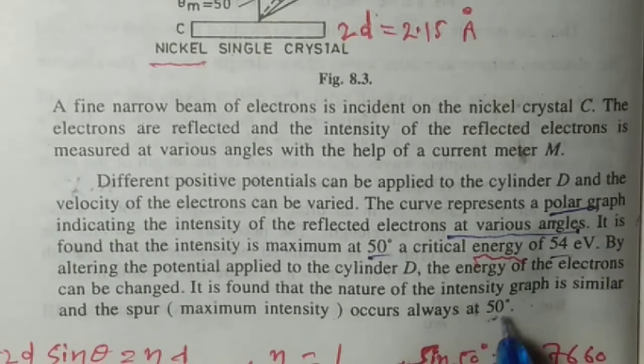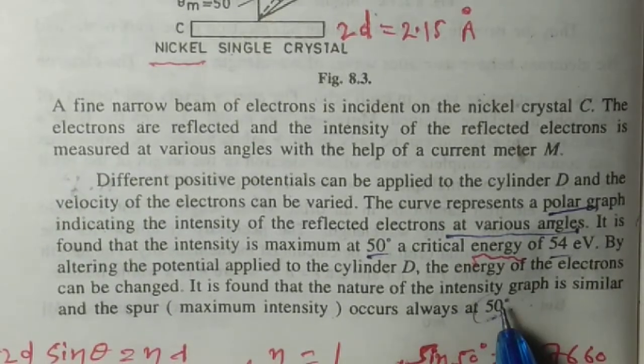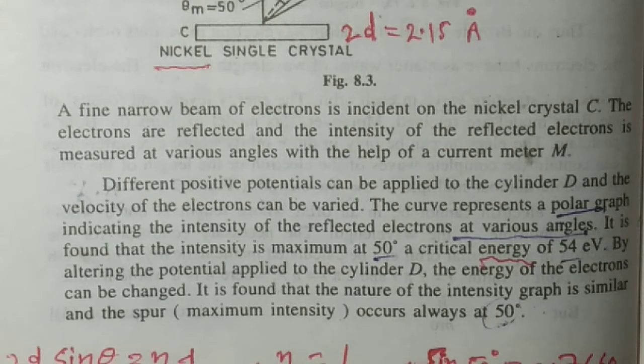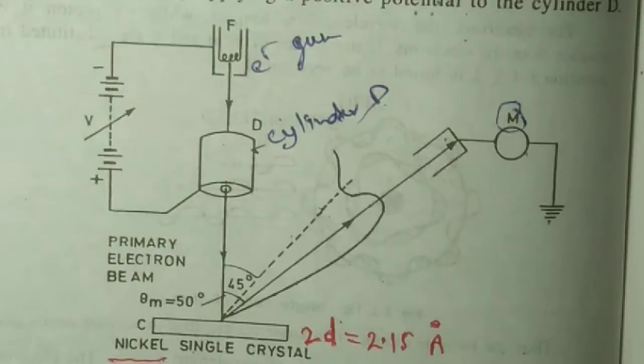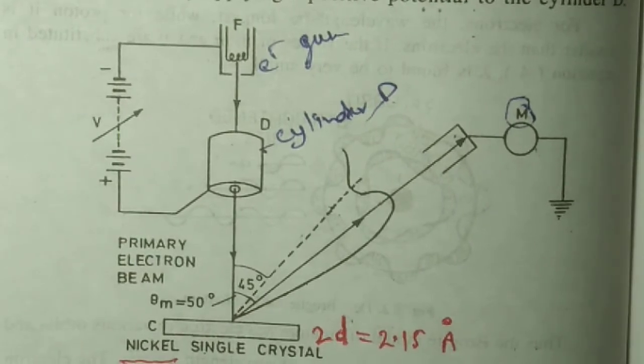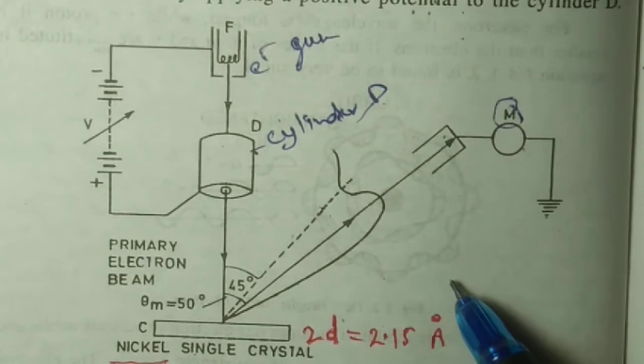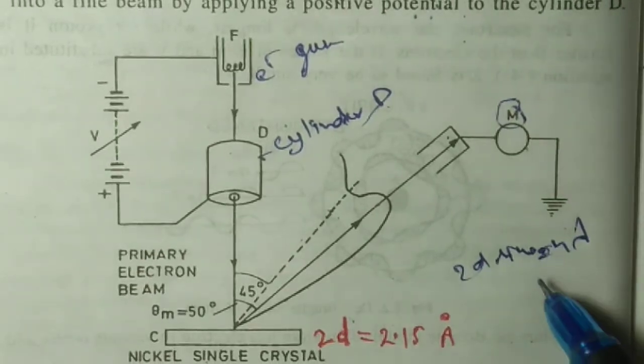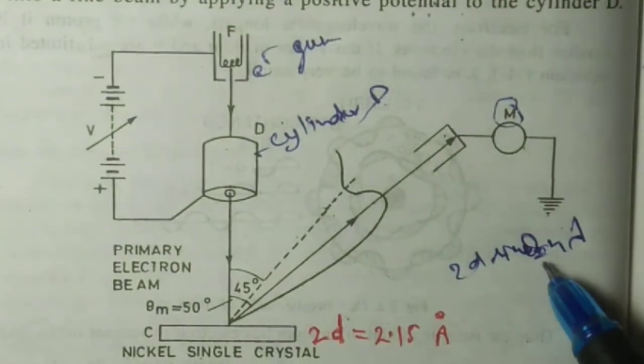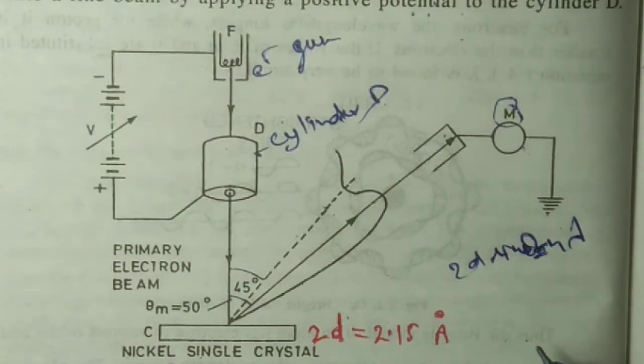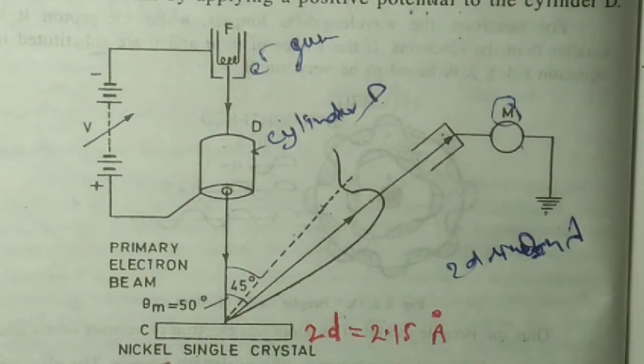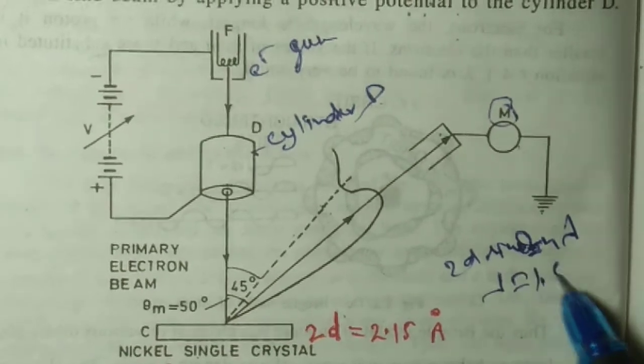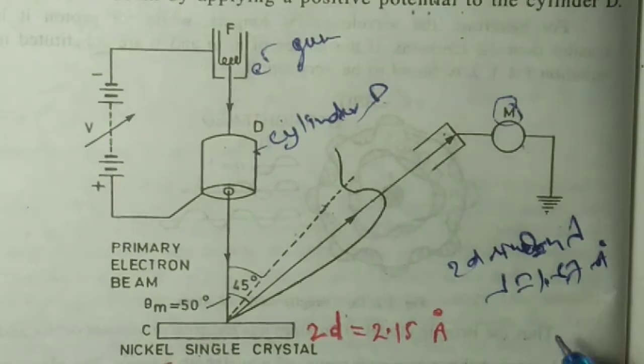Using Bragg's law, that is 2d sin theta equals n lambda, we use two formulas. The theoretical formula is 2d sin theta equals n lambda, where theta is 50 degrees. This gives lambda as 1.67 angstrom.